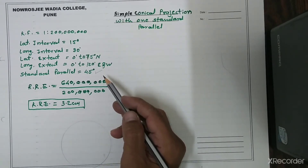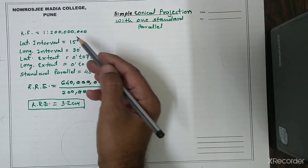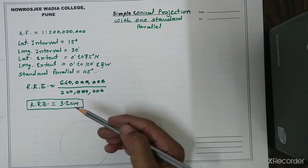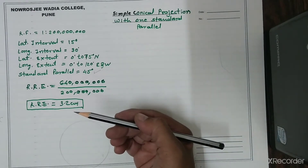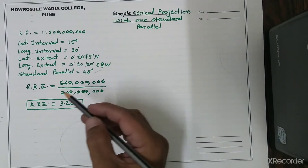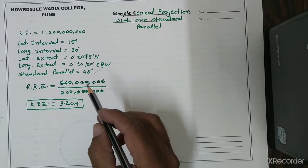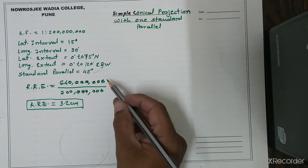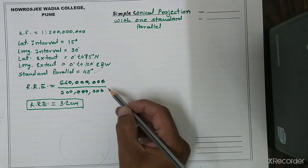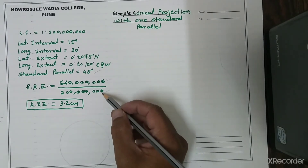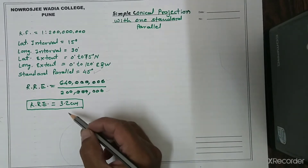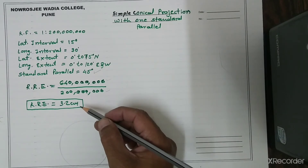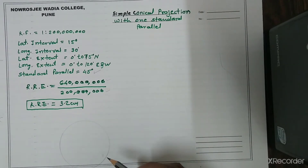One more attribute we have added is standard parallel at 45 degrees. Using this RF and the formula for RRE, we calculate the radius of the reduced earth. The formula uses 6,366,400 — the radius of the actual earth — divided by RF, giving us an RRE value of 3.2 centimeters.